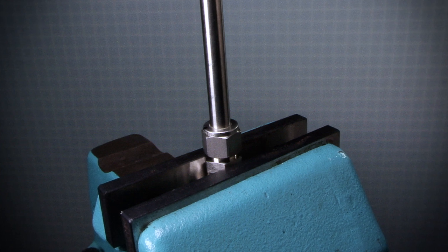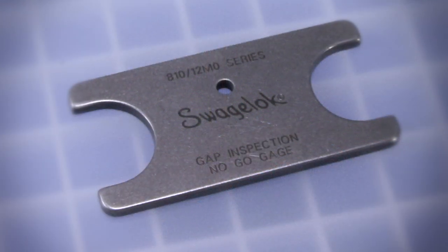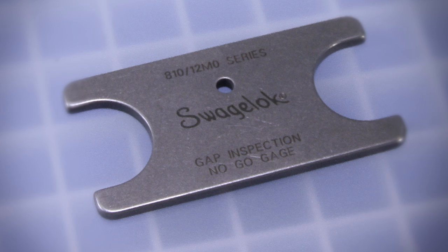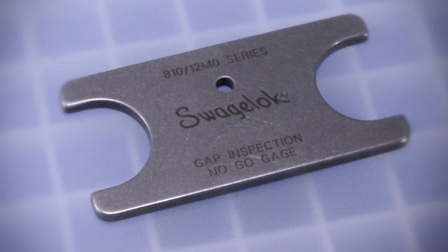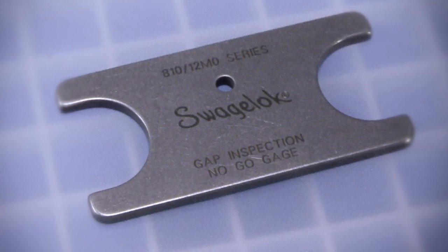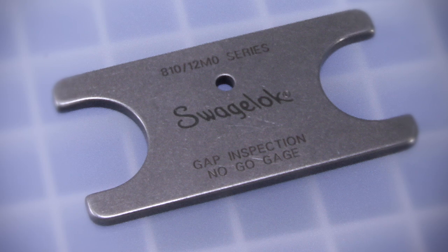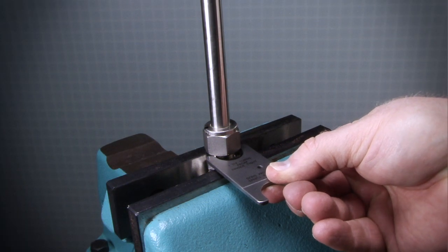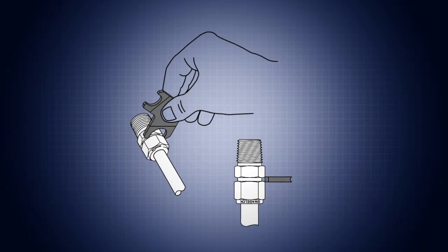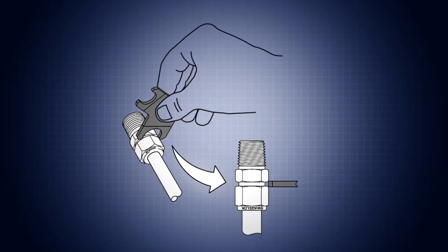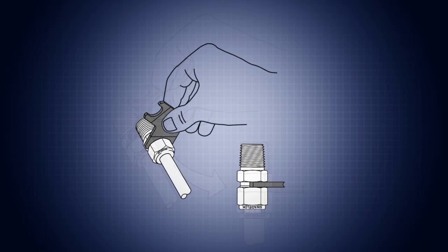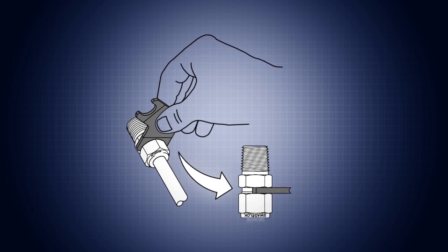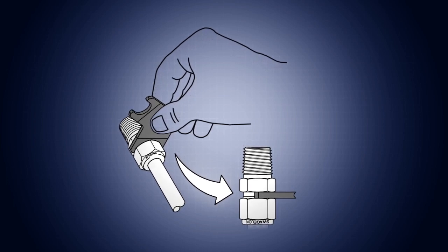Swagelok tube fittings and caps are recognized for their gaugeability. A Swagelok gap inspection gauge assures the installer or inspector that the cap has been sufficiently tightened. To use the gauge, position it next to the gap between the nut and the body. If the gauge will not enter the gap, the fitting is sufficiently tightened. If the gauge will enter the gap, then additional tightening is required.